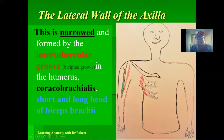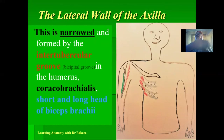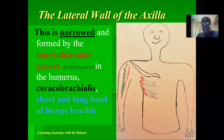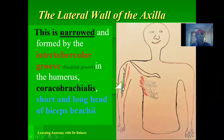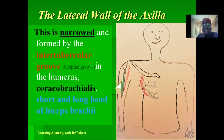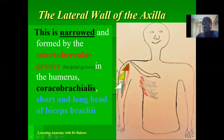The lateral wall has a different presentation from the other walls — it is narrowed at the lateral end, where the anterior and posterior walls converge, while the medial side is wider. It is formed by the intertubercular groove (or bicipital groove), which is a depression between the greater and lesser tubercles of the humerus. The biceps brachii (long and short head) and the coracobrachialis — stemming from the coracoid process of the scapula — also form the lateral wall.